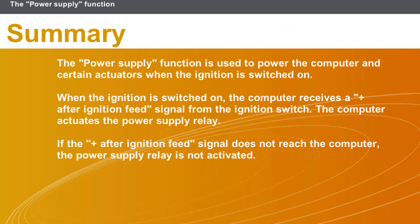In this section, we covered the following points. The power supply function is used to power the computer and certain actuators when the ignition is switched on. When the ignition is switched on, the computer receives a positive after ignition feed signal from the ignition switch and actuates the power supply relay. If the positive after ignition feed signal does not reach the computer, the power supply relay is not activated.